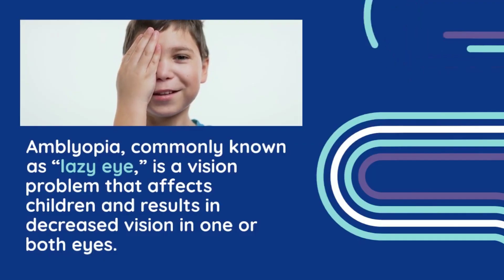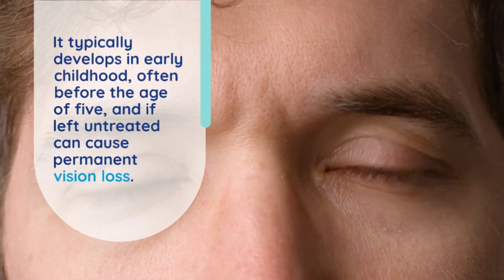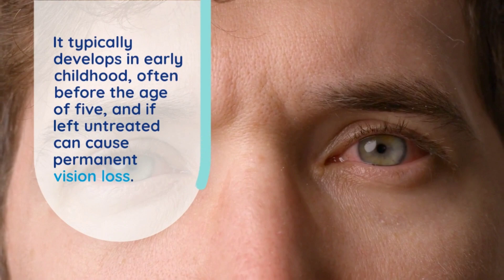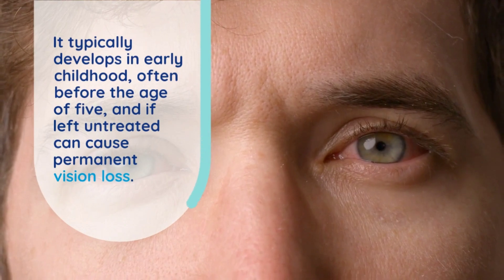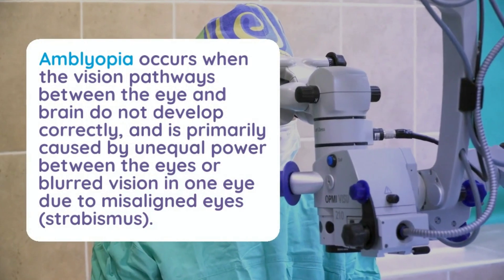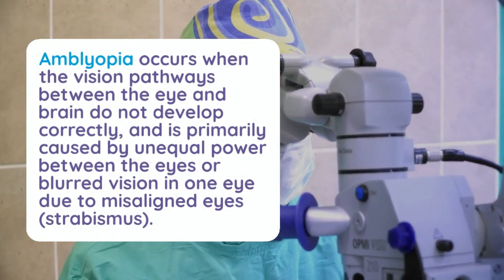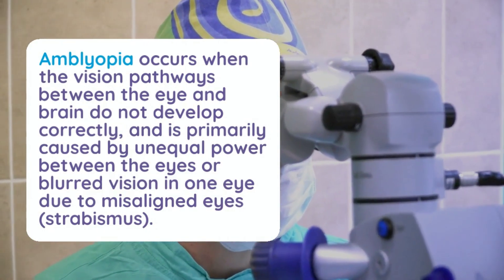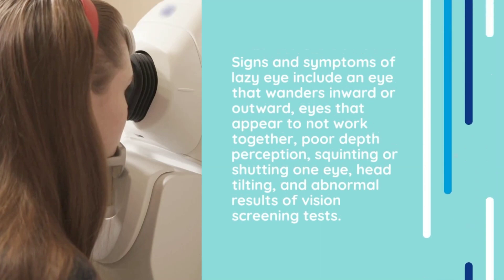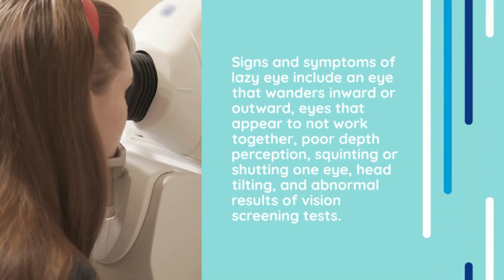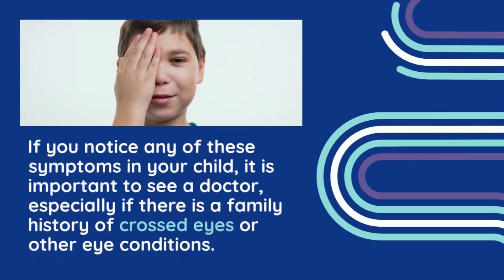Diagnosis: An eye doctor will assess visual acuity in each eye, examine eye alignment and movement, perform a refraction test to check for refractive errors, and a pupil response test to check how the pupils respond to light. A cover test — observing how the eyes work together when one is covered — can identify strabismus.